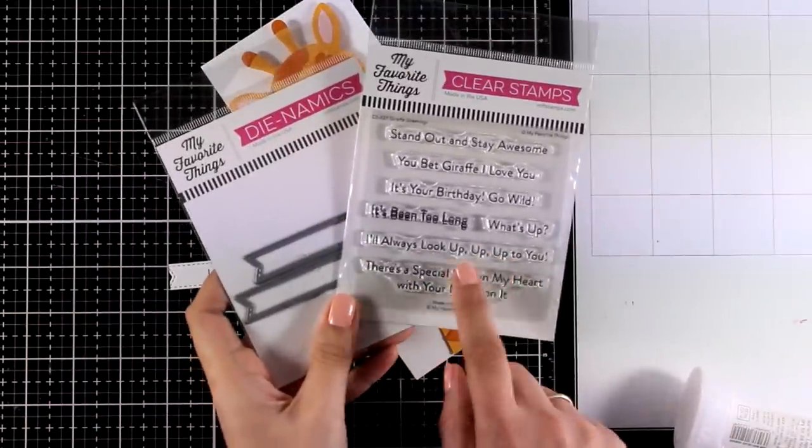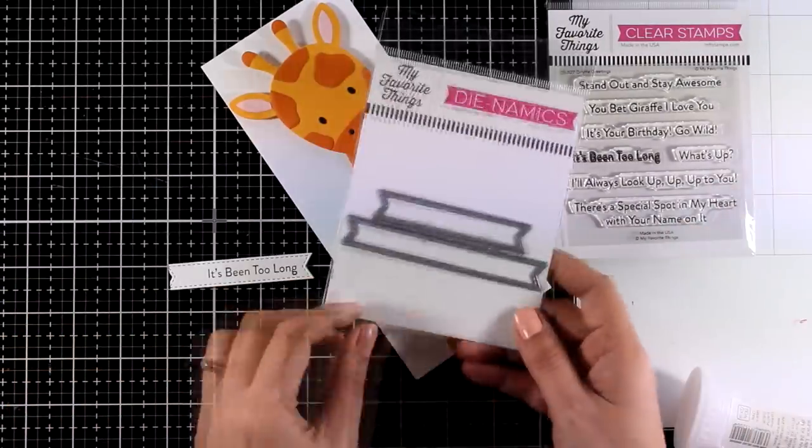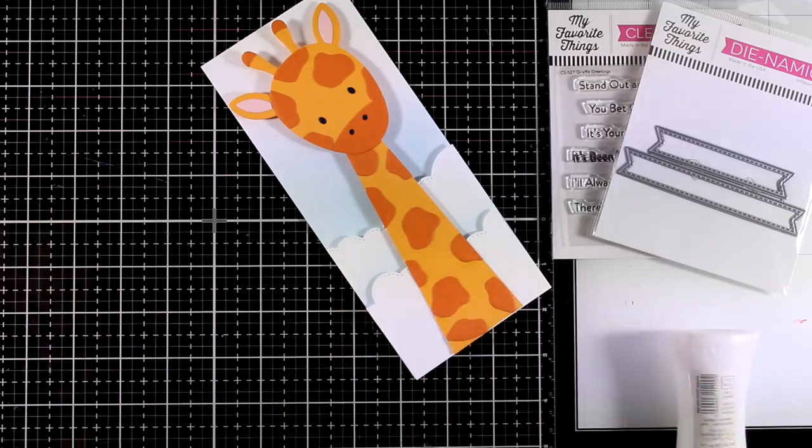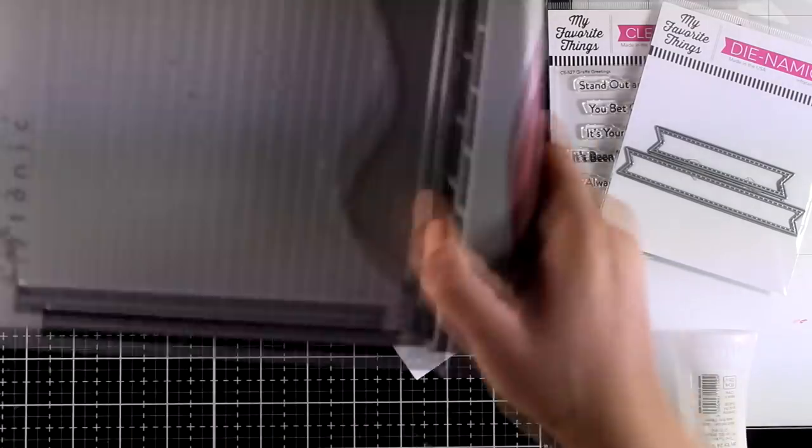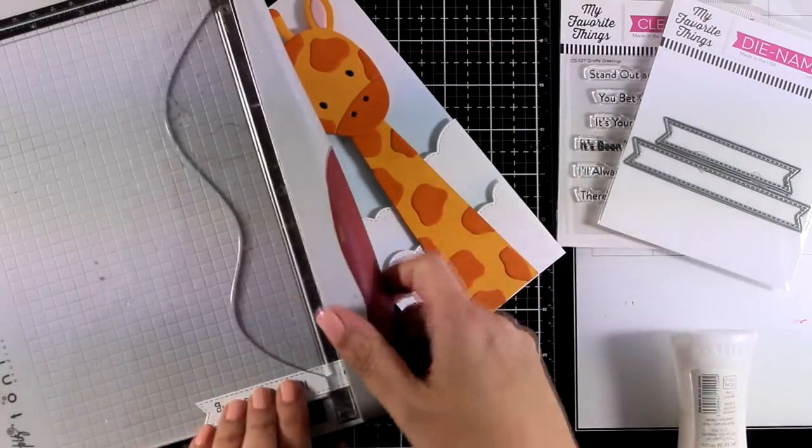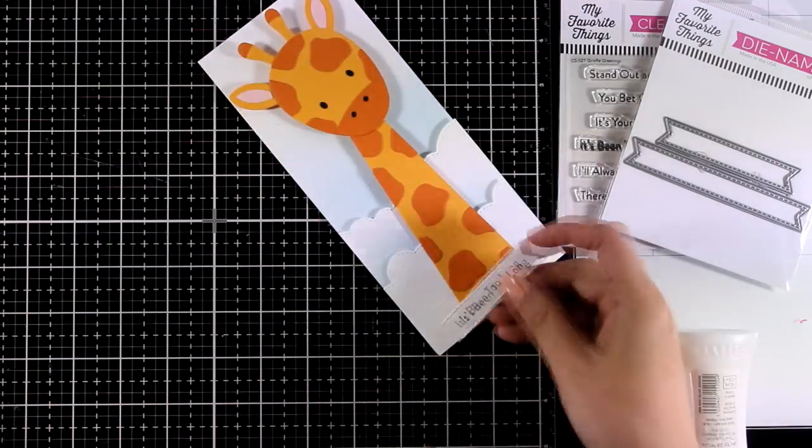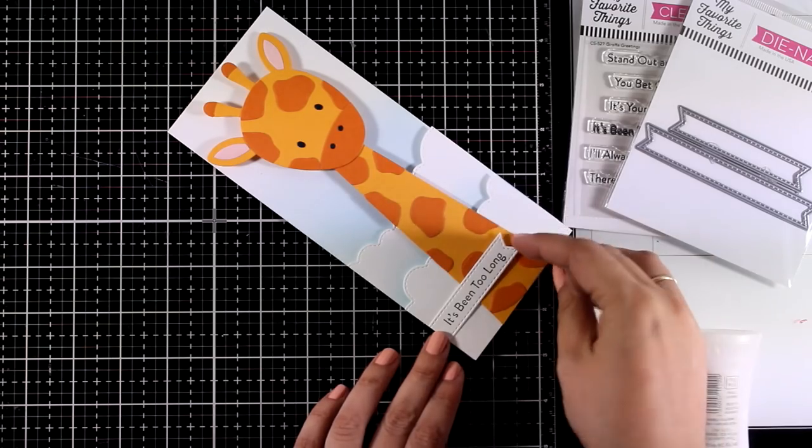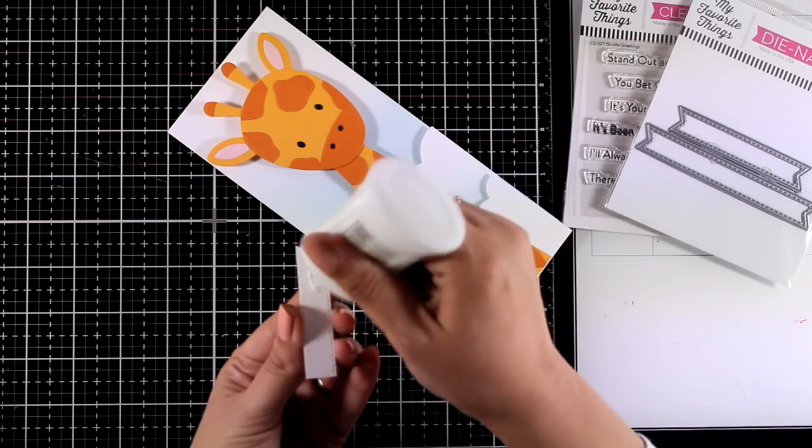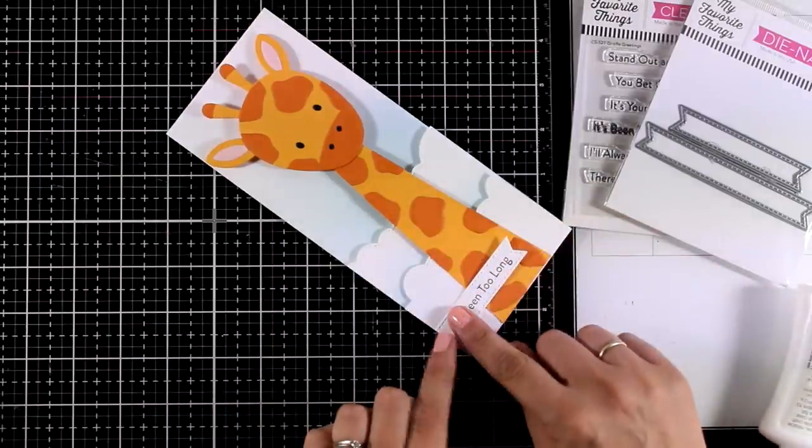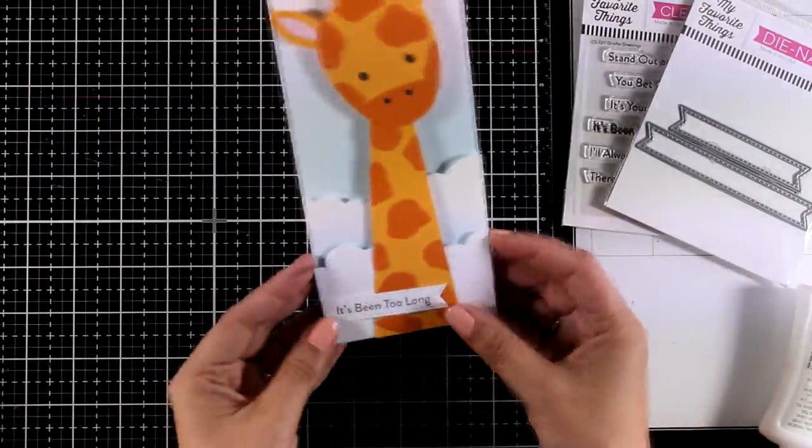For my sentiment I went with It's Been Too Long from the giraffe greetings and I did die cut it with those banner dies that have lovely stitching all around. If you don't have such banners I would suggest to grab a set. They are really inexpensive and these are the type of supplies that you will be using again and again. I absolutely love them for die cutting my sentiments. You can find them linked down below along with everything else that I'm using today.